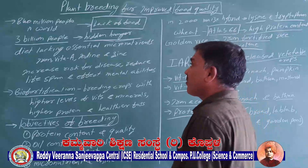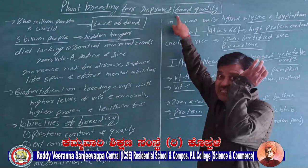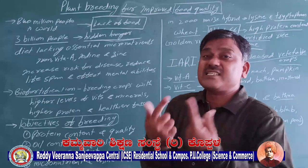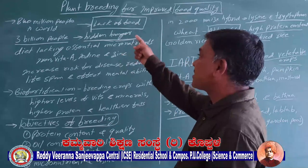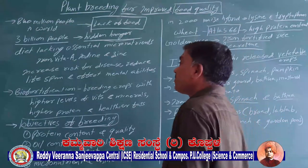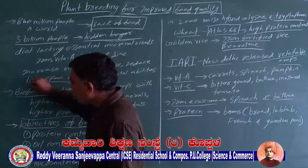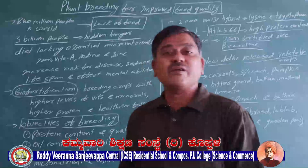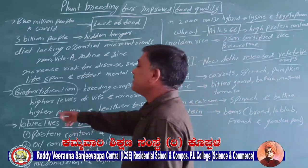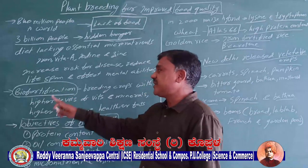A balanced diet means all essential requirements should be fulfilled. For that purpose, we go for plant breeding, which helps in increasing food quality. Plant breeding for improved food quality increases vitamins, minerals, proteins, and essential fats. This type of plant breeding is called bio-fortification. Bio means life, and in bio-fortification there is addition of essential nutrients.